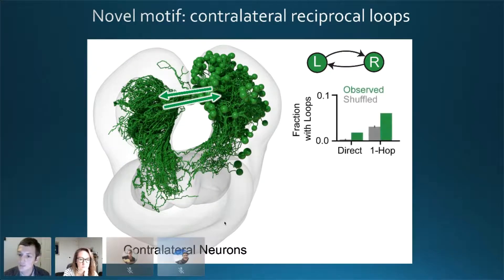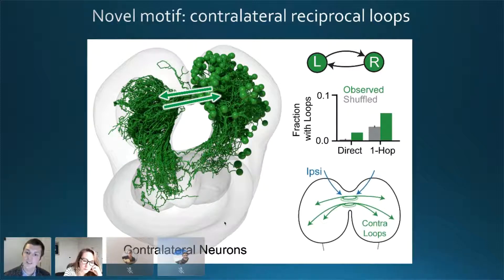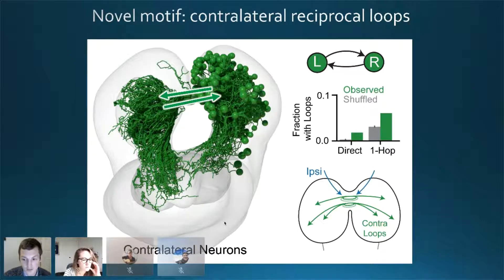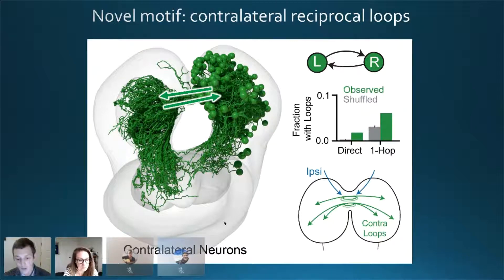These reciprocal loops were observed more often than expected by a null model. Depending on the sign of these loops, if excitatory they could be involved in signal propagation or even short-term memory — propagating a signal for a few seconds in the network. Interestingly, many of these contralateral neurons are brain hubs, meaning they communicate with many partners, suggesting they are important for brain computations. If inhibitory, these loops could be involved in interhemispheric signal comparison.